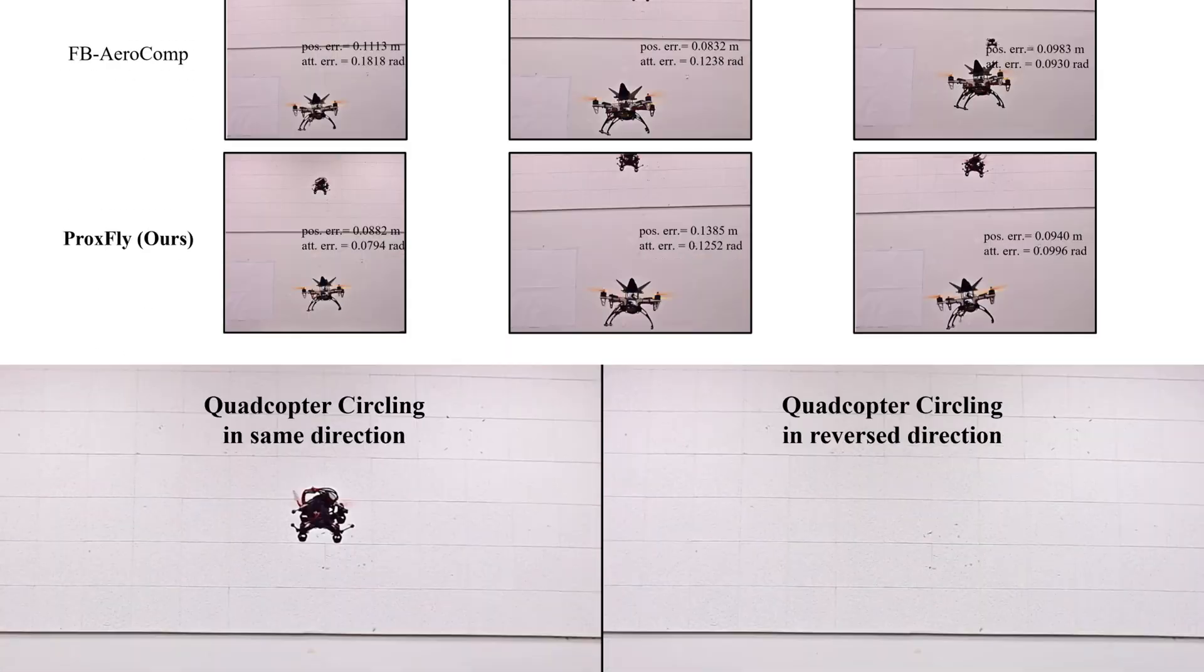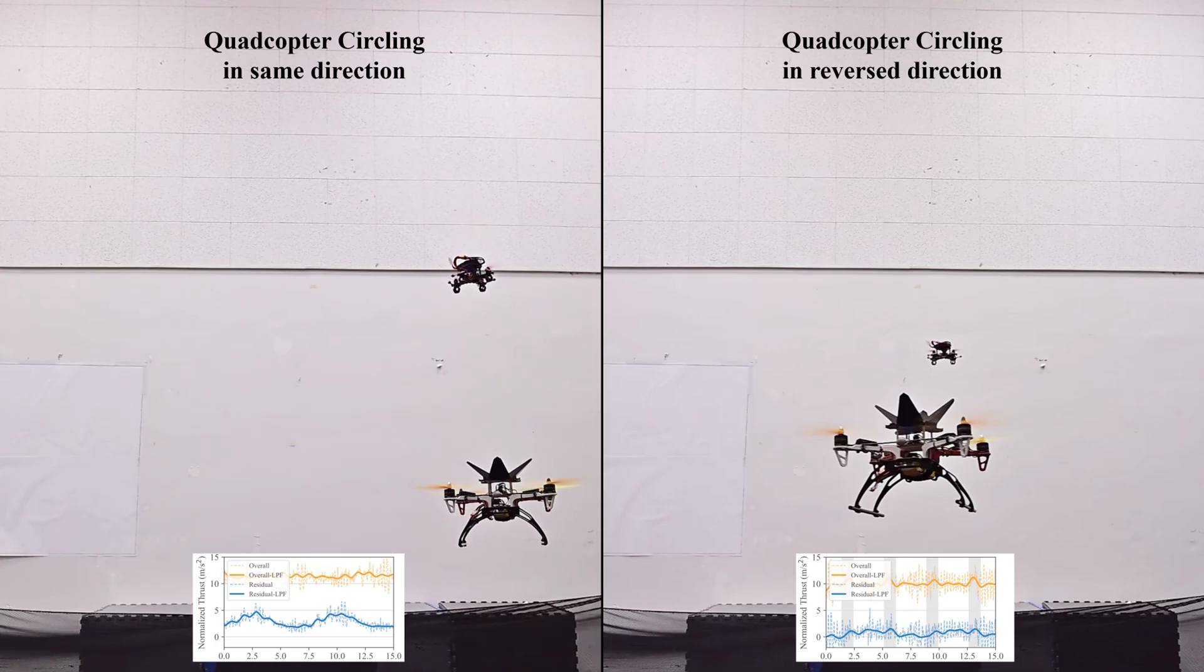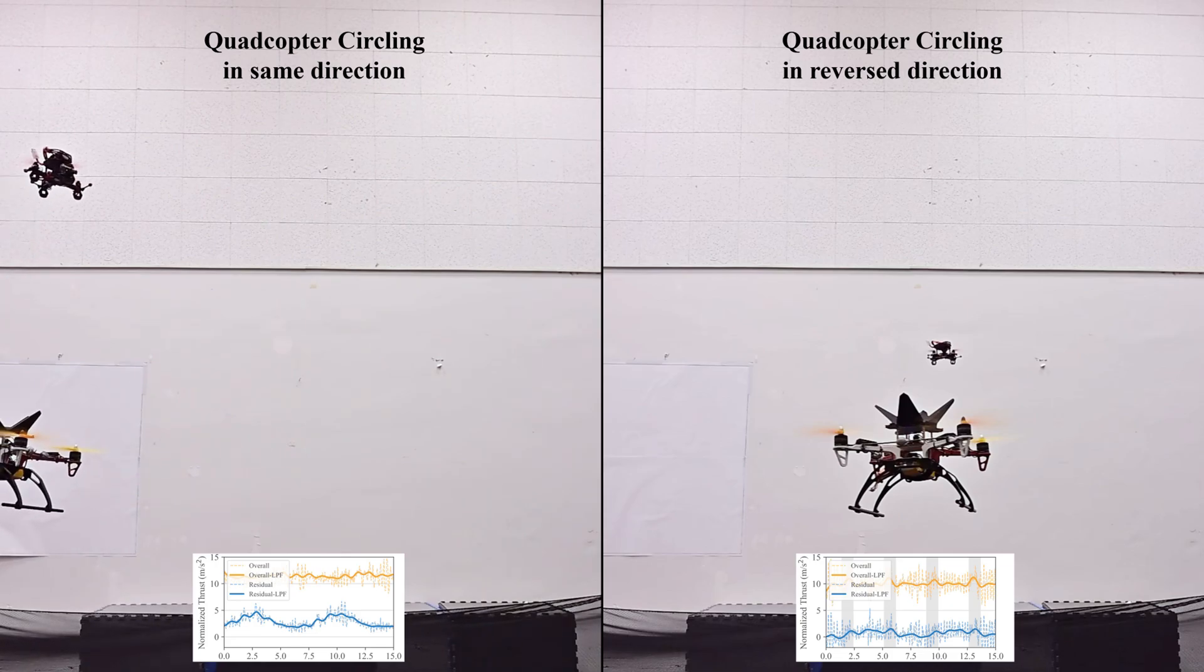Next, we show the residual thrust command in trajectory tracking. When quadcopter tracks the trajectory in the same direction, the large quadcopter suffers from the downward flow lastingly and its residual model generates positive thrust command for compensation.